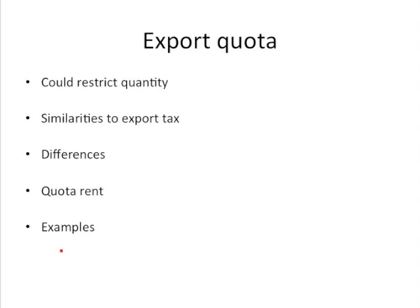In the United States, we have some export quotas — really export quotas of zero, where we ban exports of certain products. But a more relevant example is OPEC, where countries restrict the amount of exports through production quotas meant for exports, benefiting the government through their ability to exploit these quota rents.